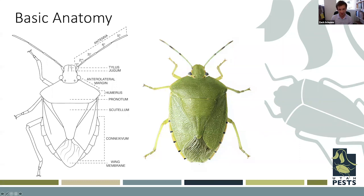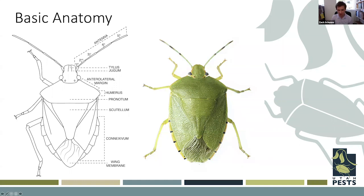Some features to use when identifying stink bugs include the large pronotum just behind the head, the corium — the wing area extending down into the membrane — and the border of the abdomen. All stink bugs have a wing membrane through which you can see the body underneath, which is a helpful identification feature. The scutellum, which looks like the end of a shovel, is also a helpful ID feature in many cases.